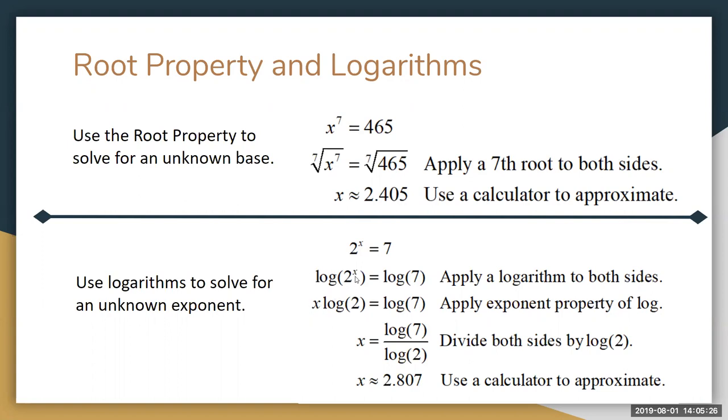Now log of 2 and log of 7 are just numbers so if you want to solve for x in this case you undo this multiplication by dividing both sides by log of 2 and you get that x is log of 7 divided by log of 2. Luckily the calculator will approximate this for us. We can plug in log of 7, log of 2 pretty easily and divide them and we come up with a number about 2.807.